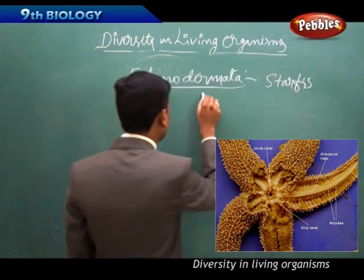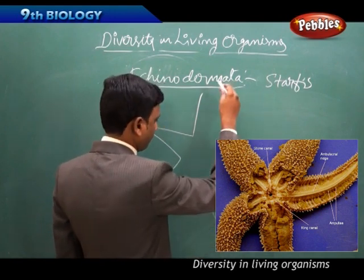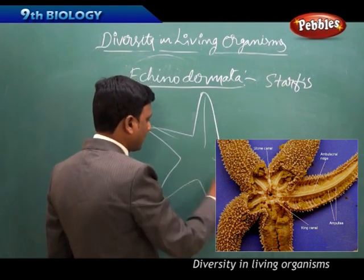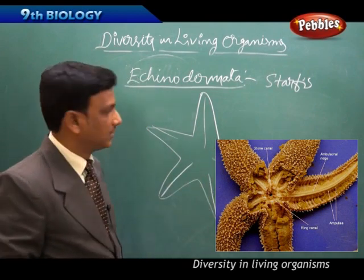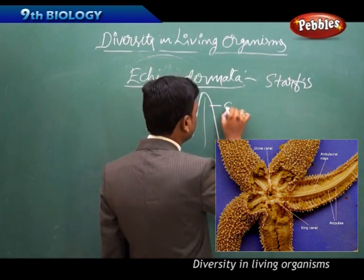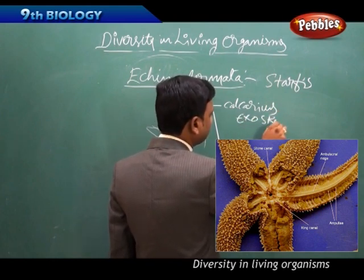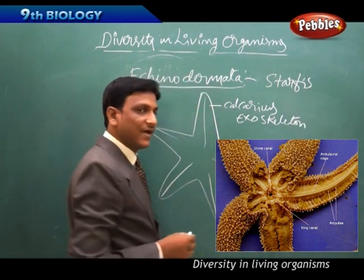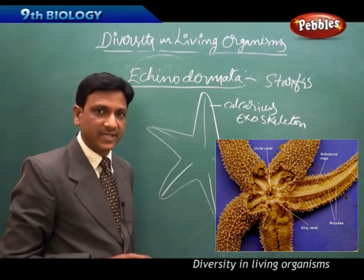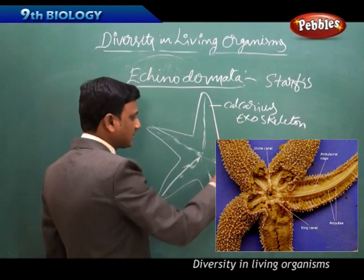The starfish has five arms. Echinoderms have a calcareous exoskeleton made of calcium. They are triploblastic with a body cavity, and they have a radial canal system through which water passes.